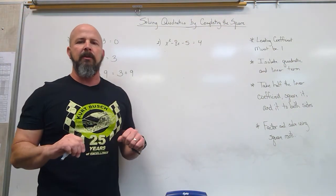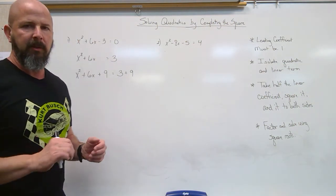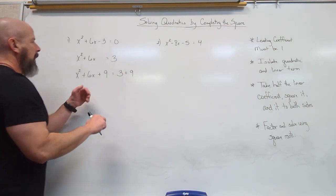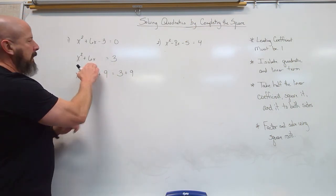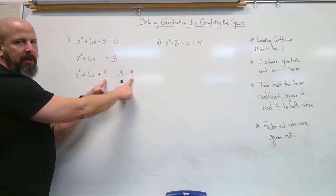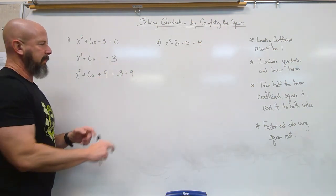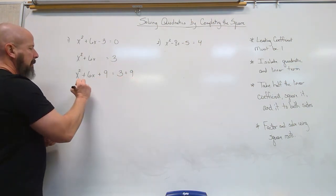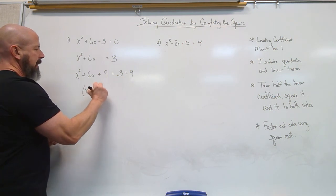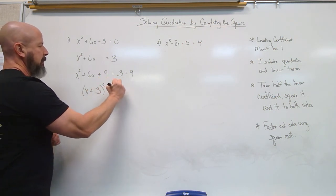Now our general rule for equations was we can do anything we want as long as we do it to both sides. What I'm doing by taking half and squaring it is picking this one number that's going to help me. I can really add anything I want to both sides, but the 9 is going to help me because the left side now factors to x plus 3 squared.